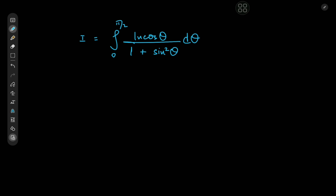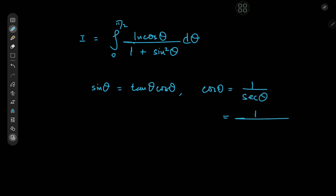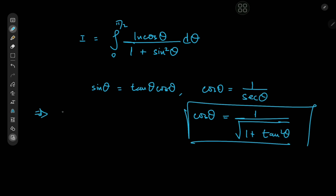To approach the solution, I'd like to introduce something I've been experimenting with recently: expressing cosines and sines in the integrand in terms of tangent functions, because tangents are quite nice to work with. For example, sin θ can be expressed as tan θ times cos θ. Now cos θ is the reciprocal of sec θ, and sec and tan have a very nice relationship: sec²θ = 1 + tan²θ, so cos θ = 1/√(1 + tan²θ). This implies sin θ = tan θ / √(1 + tan²θ).